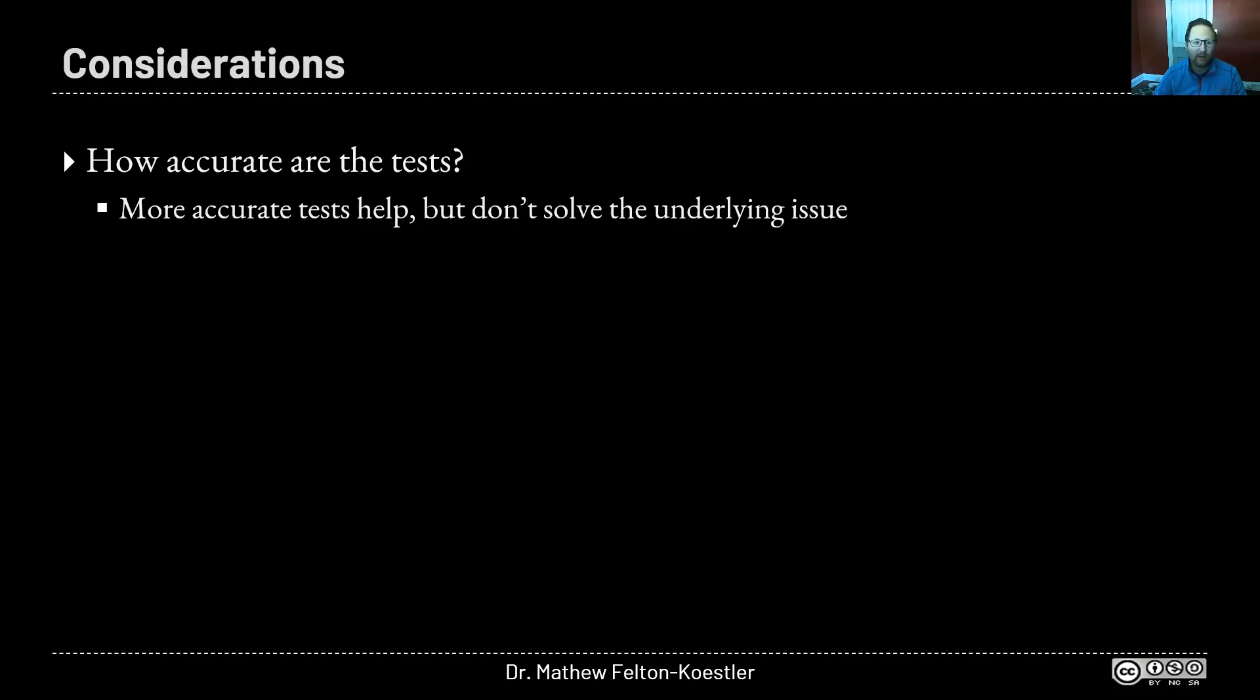Remember, this was just an example. Some of these variables really matter. So first is the accuracy of the tests. More accurate tests help, but to be clear, and as they point out in the article, they can't really solve the underlying issue. If there are lots of people who have never been affected, then there are always going to be lots of false positives, even with more accurate tests, although they do help. As a reminder, in this example, they said the test was 90% accurate. That was the assumption.